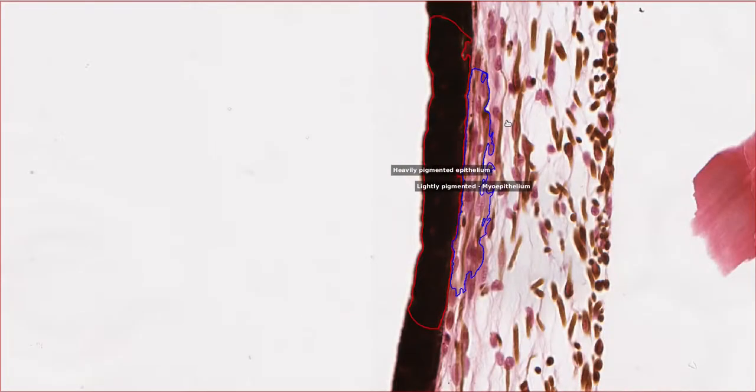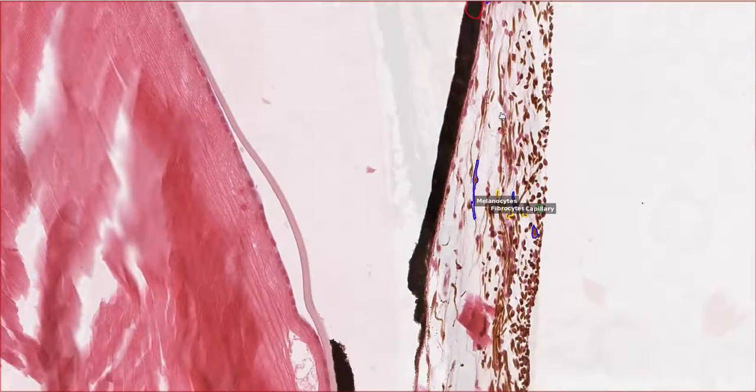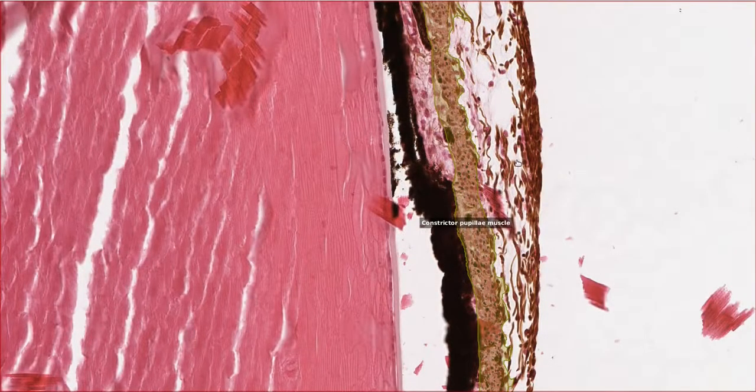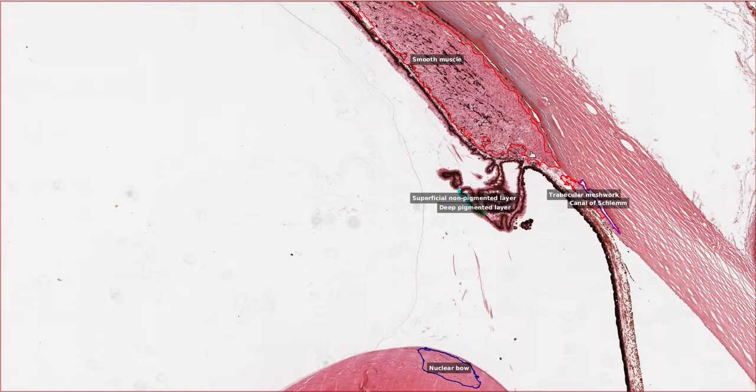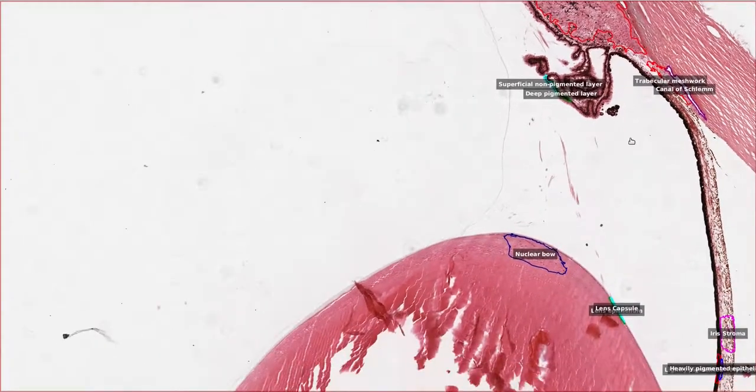The dilator pupillae muscle has an antagonistic muscle which does the opposite, the constrictor pupillae muscle. The constrictor pupillae muscle is located mostly at the free edge of the iris and is also composed of smooth muscle. If we follow the iris back to the other end, then we encounter the ciliary body. But before we do that, let's have a quick look at the lens.